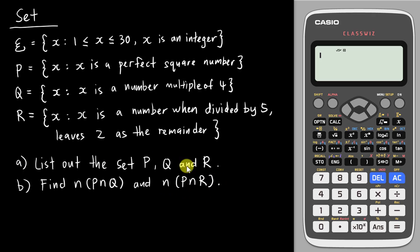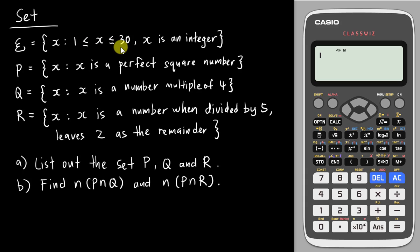We're going to do part A first. We want to list out the perfect square numbers within the range from 1 to 30. We could do it manually, but I'm going to teach you some calculator tricks here.